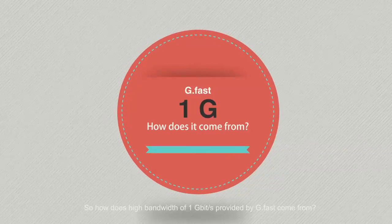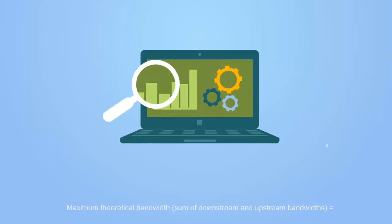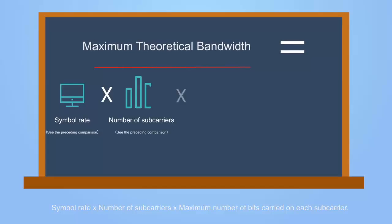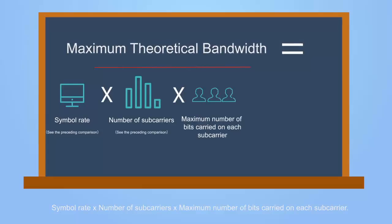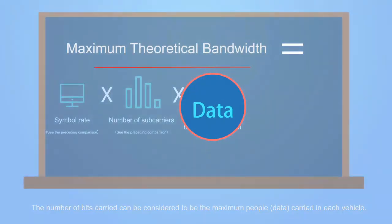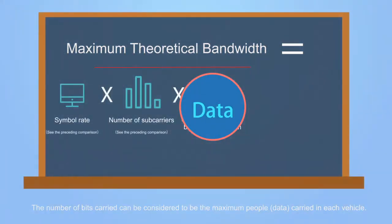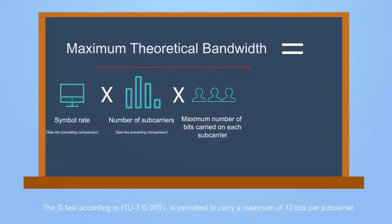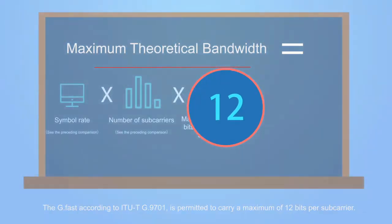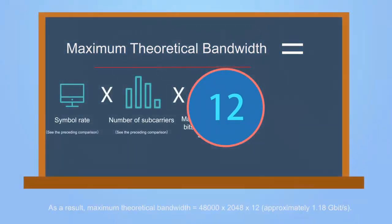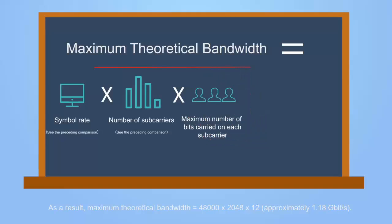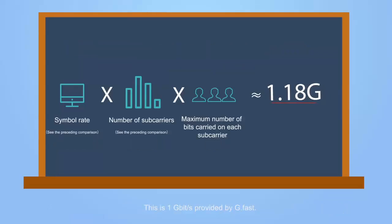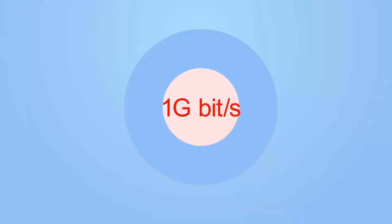So, how does the high bandwidth of 1 gigabit per second provided by G.Fast come from? Maximum theoretical bandwidth is equal to symbol rate multiplied by the number of subcarriers, multiplied by the maximum number of bits carried on each. G.Fast, according to ITU-T G.9701, is permitted to carry a maximum of 12 bits per subcarrier. As a result, maximum theoretical bandwidth equals 48,000 × 2,048 × 12, approximately 1.18 gigabits per second — this is the 1 gigabit per second provided by G.Fast.